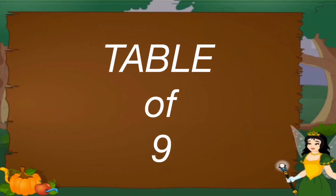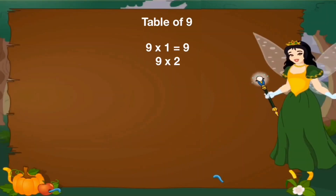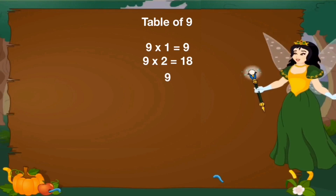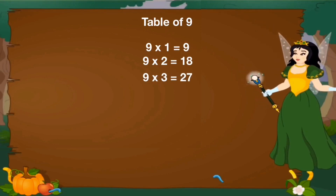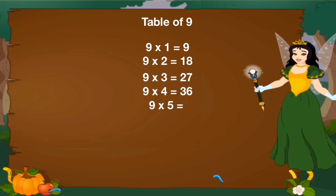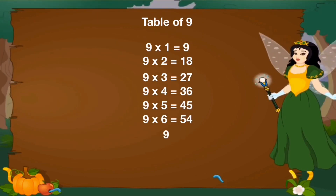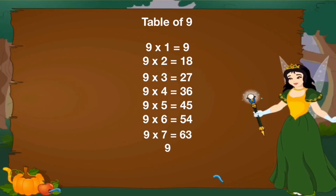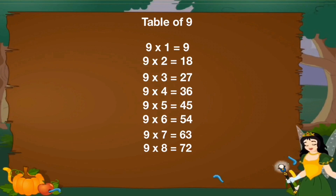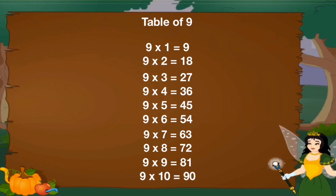Let's revise table of 9. 9 1's are 9, 9 2's are 18, 9 3's are 27, 9 4's are 36, 9 5's are 45, 9 6's are 54, 9 7's are 63, 9 8's are 72, 9 9's are 81, 9 10's are 90.